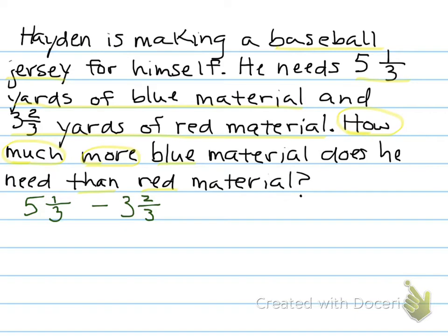What I'm going to do is change them into improper fractions. I'm going to use a different color. To change 5⅓ into an improper fraction, multiply on the bottom, add the top. 3 times 5 is 15, plus 1 is 16. Denominator stays the same. Now, 3⅔: 3 times 3, plus 2. 3 times 3 is 9, plus 2 is 11. Denominator stays the same.